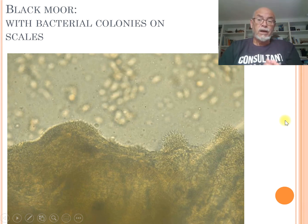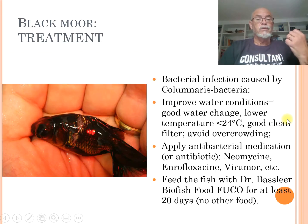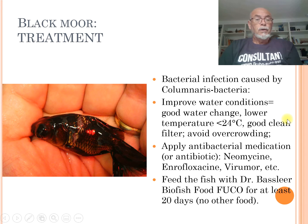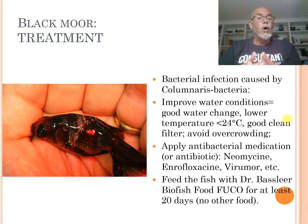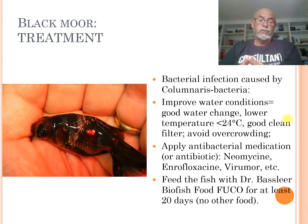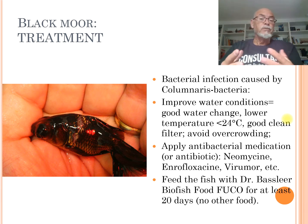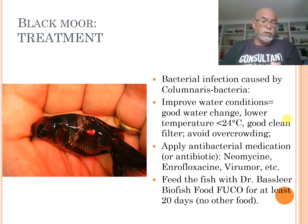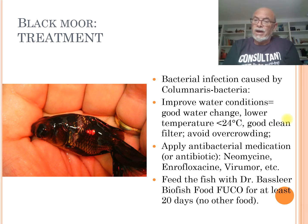Columnaris can be treated specifically with good treatment. The first thing I recommend is to improve water conditions. In this case, also lower the temperature below 24 degrees Celsius. Good cleaning of the filter, and avoid overcrowding. These are all things that can help the fish or the group of fish — for example, if you have a few hundred Blackmoors in one tank, you have to be careful.